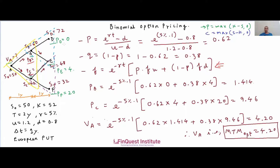This is how we price an option using the binomial option pricing model. In our certificate course on Quantitative Risk Management we dig deeper into risk-neutral valuation, no-arbitrage, and delta hedging. Binomial option pricing is also covered in the FRM Part 1 examination. To know more, visit www.finquestinstitute.com and feel free to leave comments below.